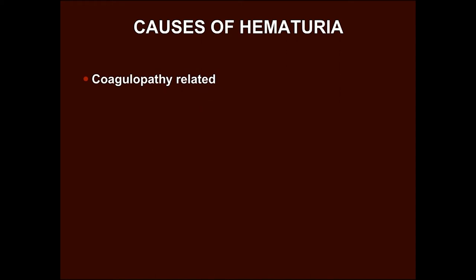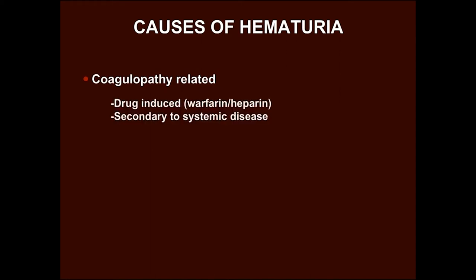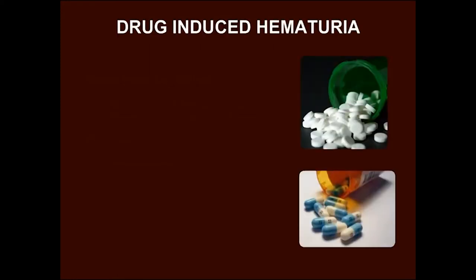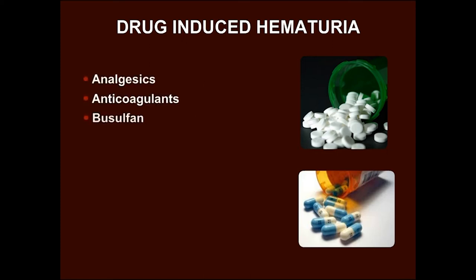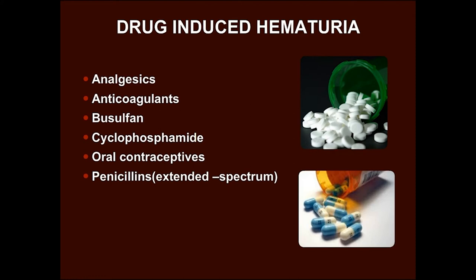Coagulopathy-related hematuria can be drug-induced or secondary to systemic disease. Factitious hematuria in females may be due to menstruation. Some of the drugs implicated as causes of hematuria are analgesics, anticoagulants, busulfan, cyclophosphamide, oral contraceptives, penicillins, quinine and vincristine.